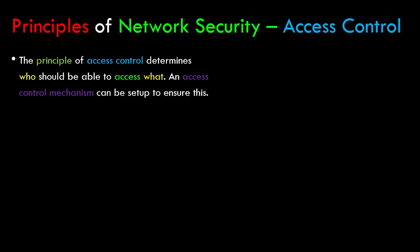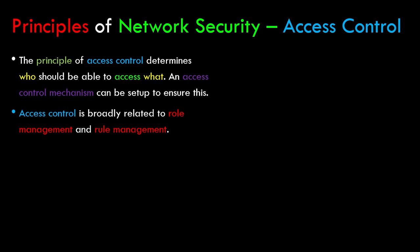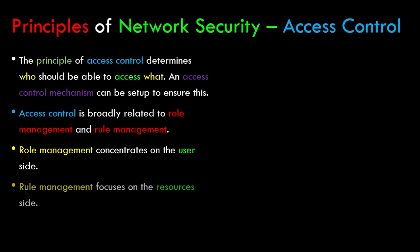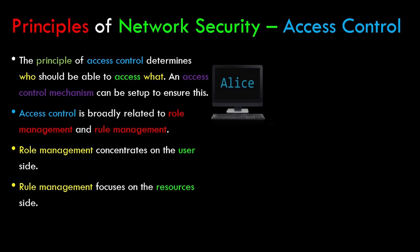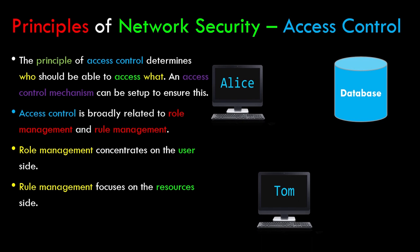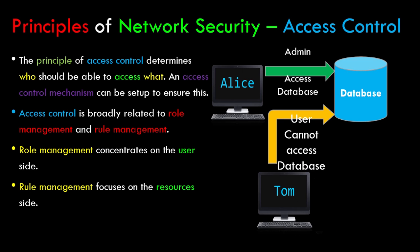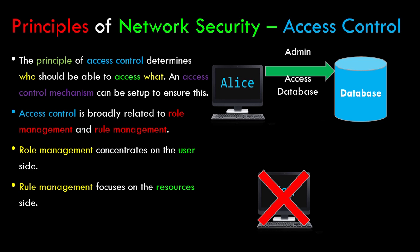Let's have a look at the principle of access control. This principle determines who should be able to access what. Access control is broadly related to role management and rule management — role management concentrates on the user side while rule management focuses on the resources side. For example, we have two users Alice and Tom: Alice is admin and Tom is a normal user. Admin should be able to access the database but Tom should not, and access control mechanism ensures such functionality.